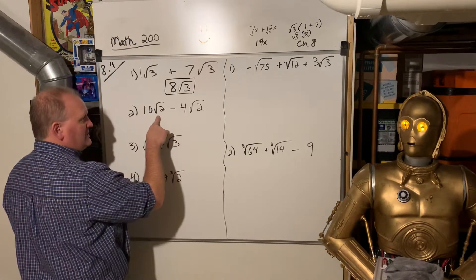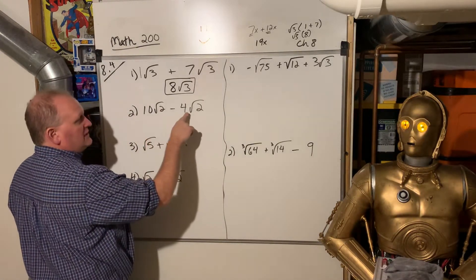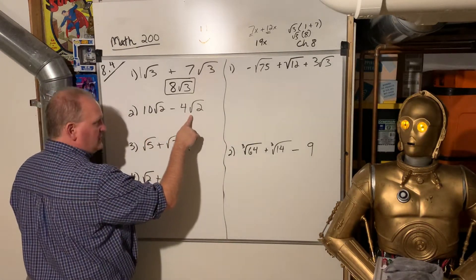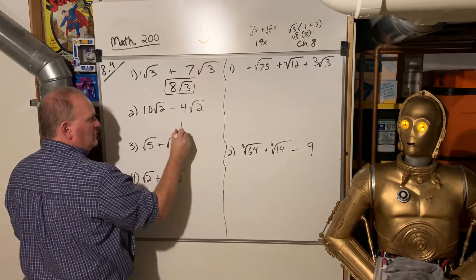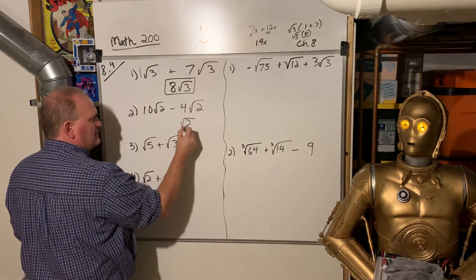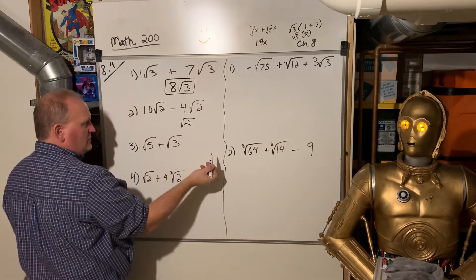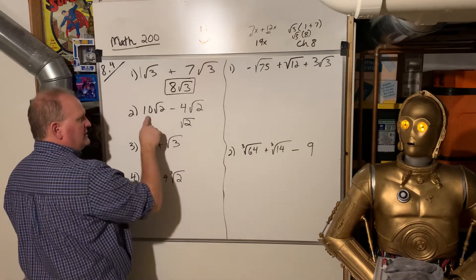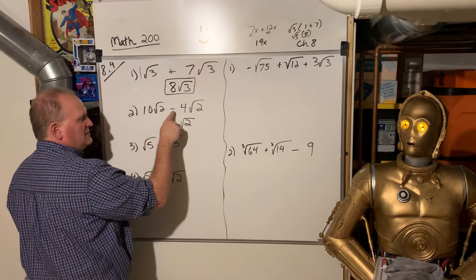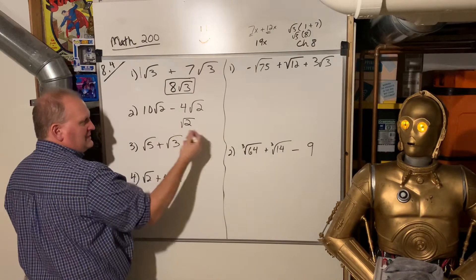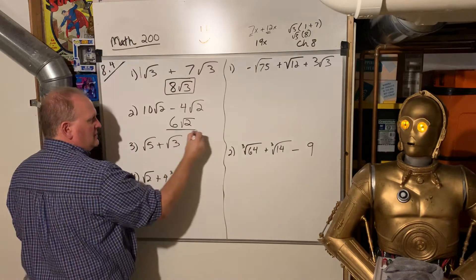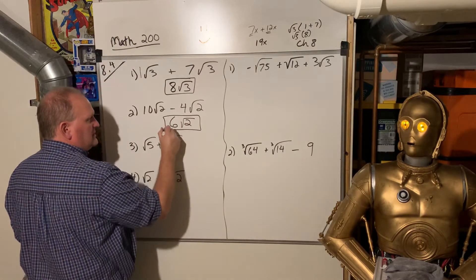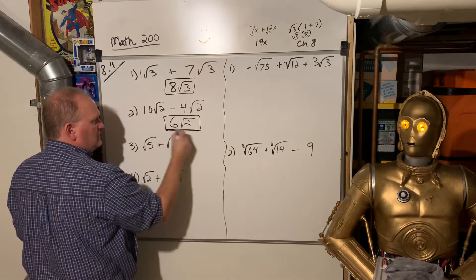Same deal: 10 square roots of 2 minus 4 square roots of 2 — you kind of put the square root of 2 on a holding pattern. That's going to stay the square root of 2, but then 10 minus 4 is 6. So that is 6 square roots of 2.